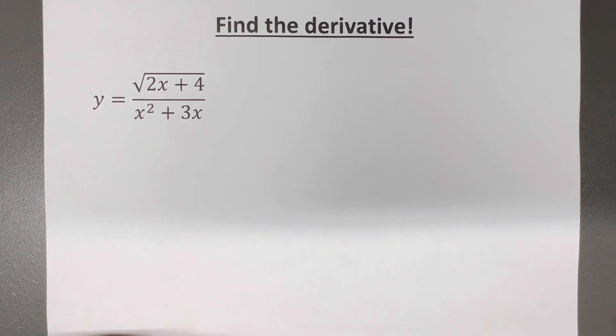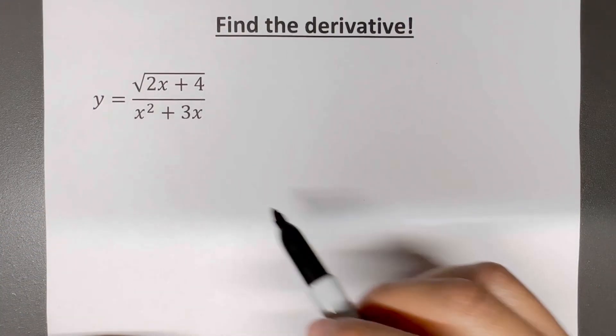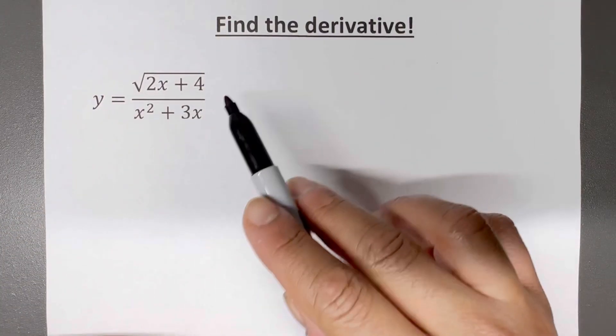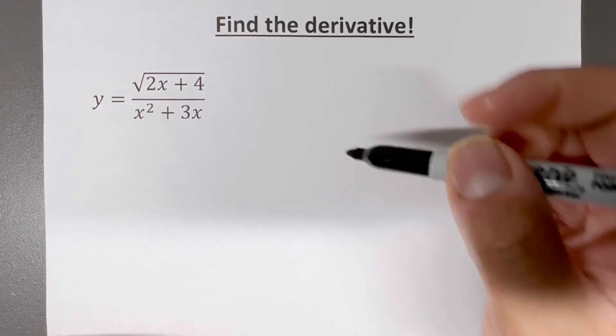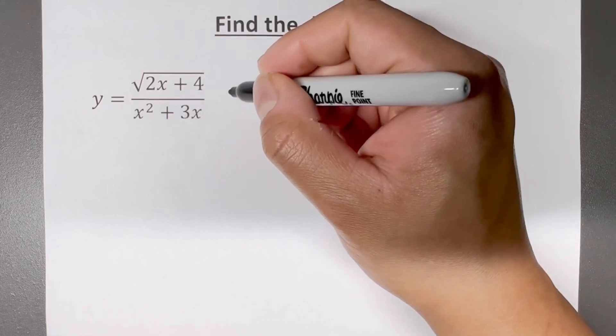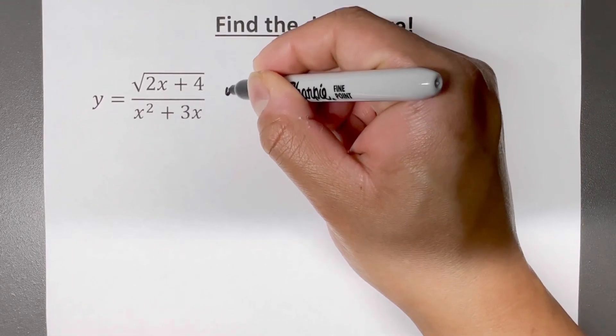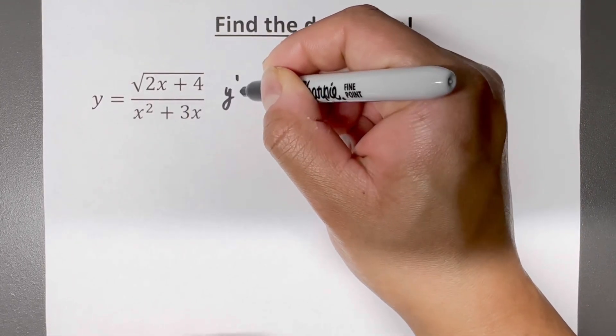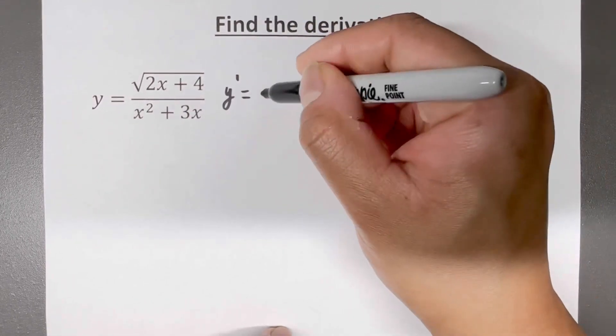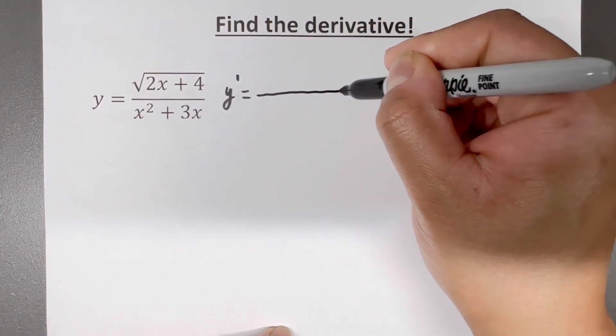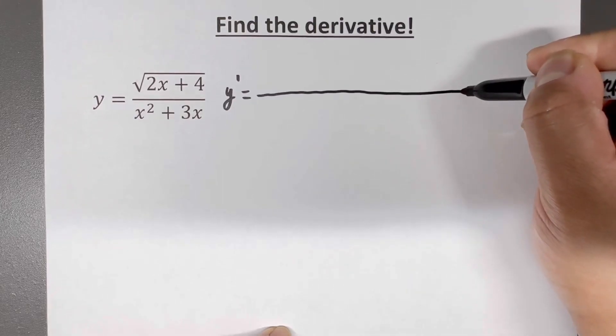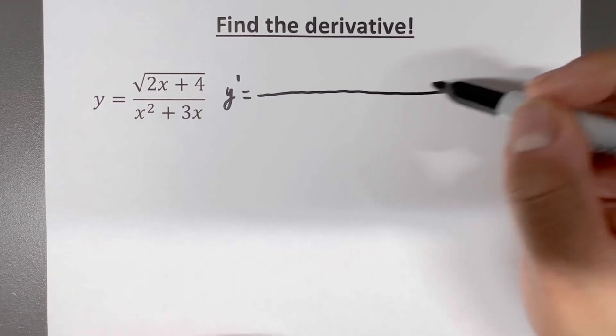We're going to take the derivative of this thing. We've got the quotient rule mixed with the chain rule — this is what we're going to do. We're going to start off by saying that y prime is equal to, well, it's overall the quotient rule.